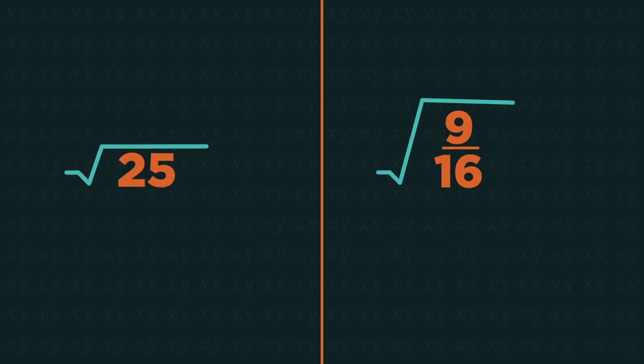So square root 25 and square root 9/16 are not surds. Because even though they are inside a square root sign, they can be evaluated. We can simplify them.